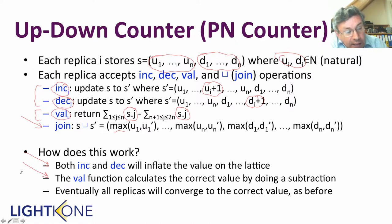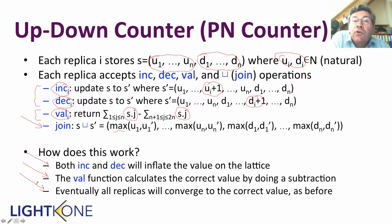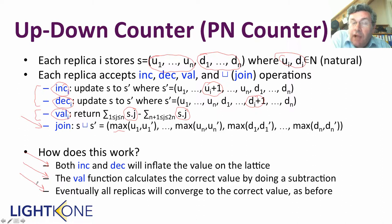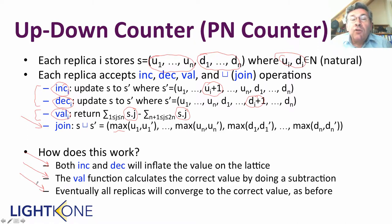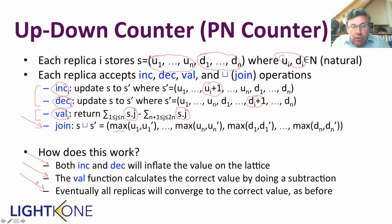Exactly in the same way as for the grow-only counter, all replicas will converge to the correct value using only replica-to-replica communication. This is how you can represent values that don't always grow using a lattice where the values do always grow.